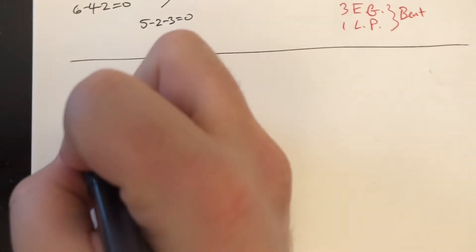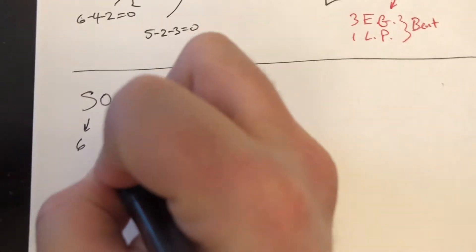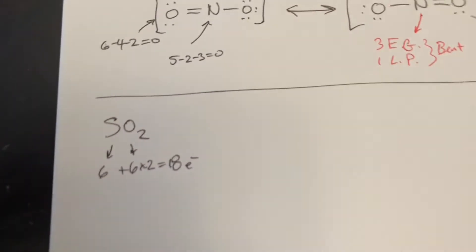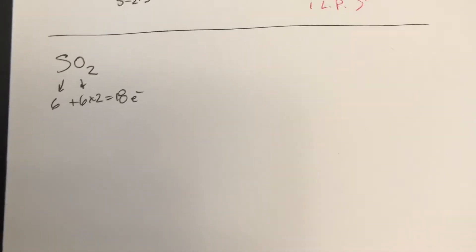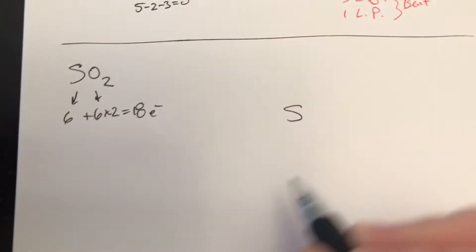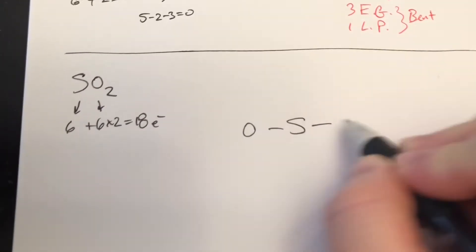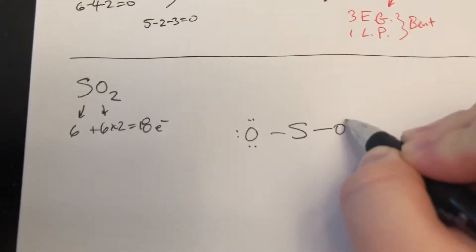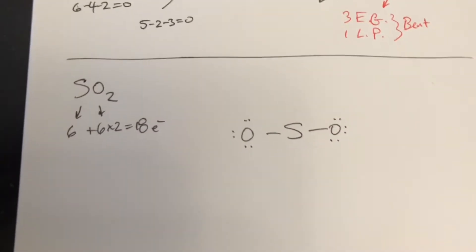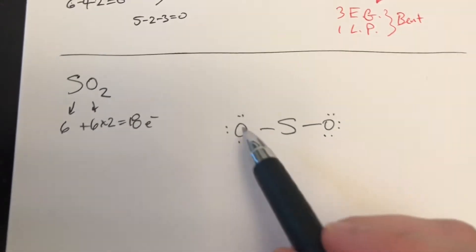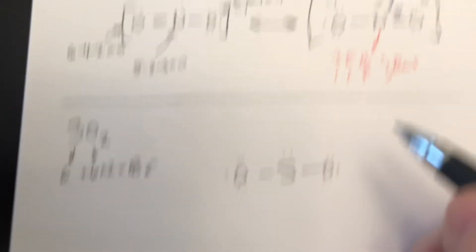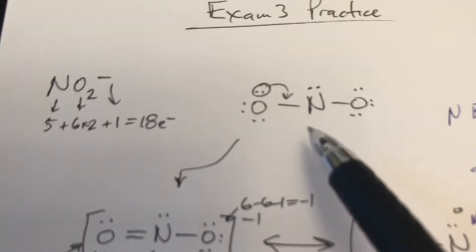Sulfur has six valence electrons, oxygen has six valence electrons times two, which also gives us 18 total — similar to the last one. Sulfur is farther away from fluorine, so I'm going to put that in the middle. We give the outer atoms what they need first. Those oxygens now have their octets, but we've used 16 electrons and have two left for the middle.